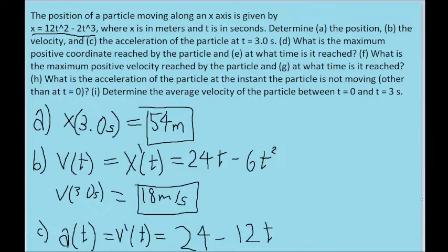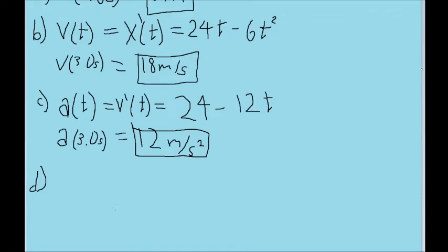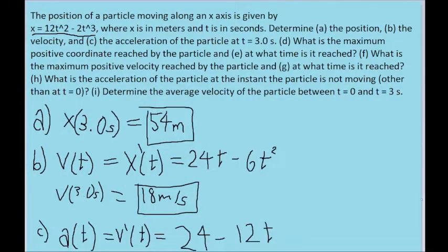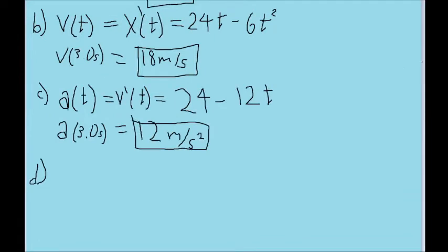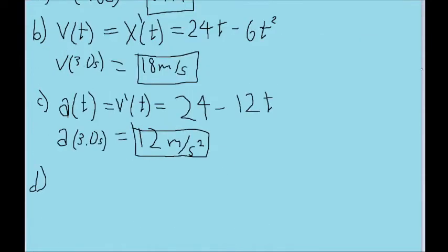Things get a little more complicated with part D, where we're asked to find the maximum positive coordinate reached by the particle. When we're talking about maximum, maxima or minima, or just extreme values in general, this uses a slightly more advanced calculus technique called optimization. In a nutshell, if we want to maximize a function, so in this case we want to maximize the position function, then we need to find the spot where the derivative is equal to zero. So if we want to find the maximum value for x, we need to find out when the velocity function is equal to zero.